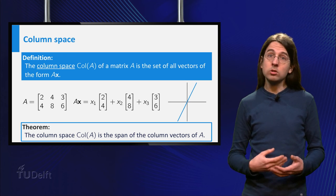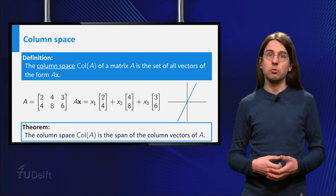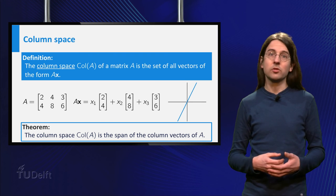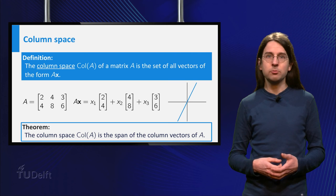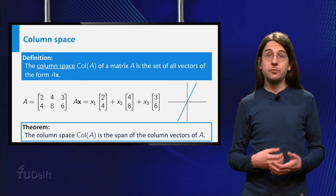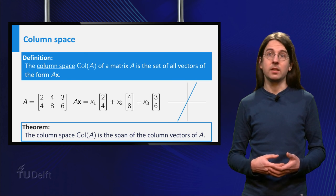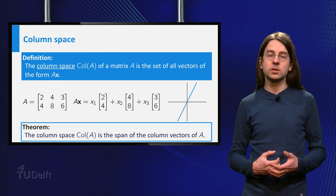In this case all columns are multiples of the vector 1, 2, so the outcomes are all multiples of 1, 2 as well. These vectors form the column space of A, a line through the origin in R2.